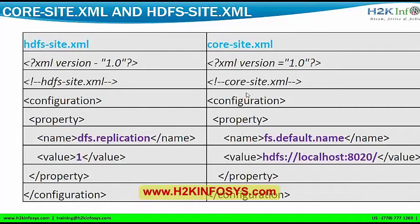The core-site.xml follows the same structure as hdfs-site.xml, but the name and value change. The property 'fs.default.name' will tell you what the name node address is that we are going to connect to. The default address would be port 8020, so the name node would be connecting to port 8020. Every type of setup will have its own port numbers — for example, Apache connects to port 80, and Tomcat connects to port 8080. Those are default ports, and again they are configurable.